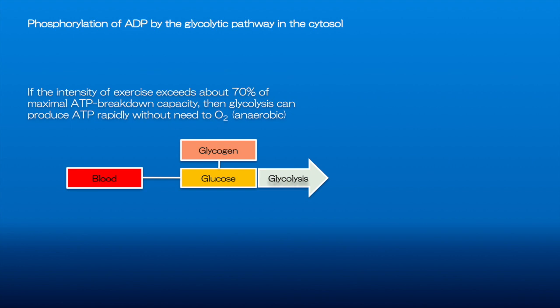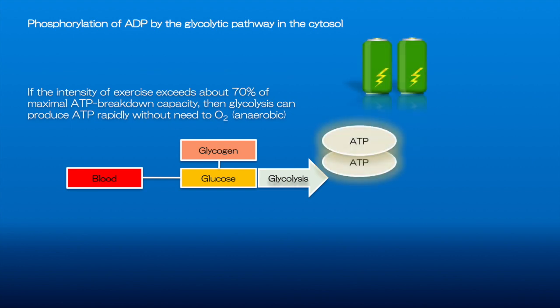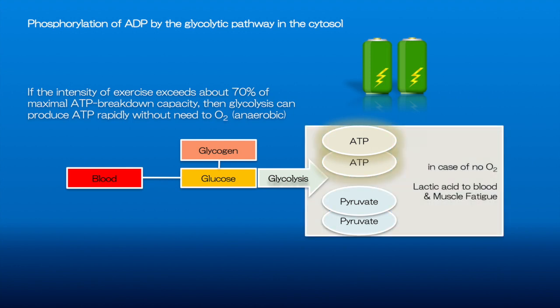The glycolytic pathway produces only a small quantity of ATP from each molecule of glucose metabolized — just two ATPs, which is not much, but it is produced very rapidly. This is associated with a corresponding increase in the production of lactic acid from pyruvate, which can also cause muscle fatigability.